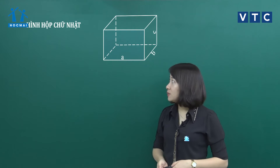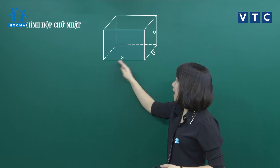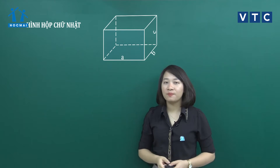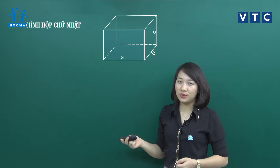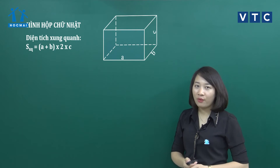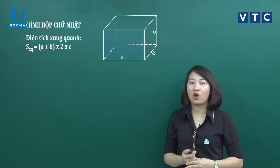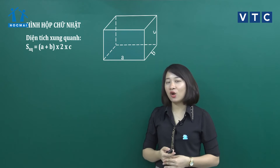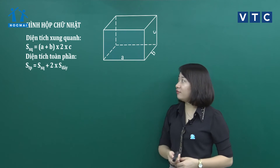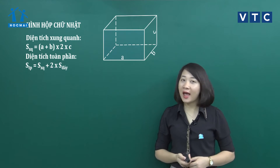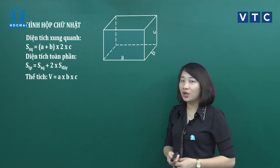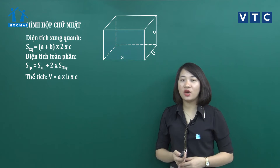Với hình hộp chữ nhật thì sẽ có 3 chiều: chiều dài là A, chiều rộng đáy là B và chiều cao là C. Diện tích xung quanh bằng chu vi đáy nhân với chiều cao, tức là (A + B) x 2 x C. Diện tích toàn phần bằng diện tích xung quanh cộng với 2 lần diện tích mặt đáy (A x B). Thể tích của hình hộp chữ nhật sẽ bằng A x B x C — chiều dài x chiều rộng nhân với chiều cao.